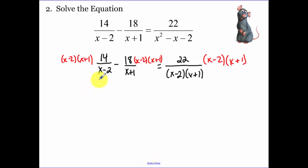x minus 2 times x plus 1 for each term. Now, x minus 2's cancel, so I'm left with 14x plus 14. x plus 1's cancel, so I need to distribute a negative 18: minus 18x plus 36. Make sure you're distributing the negative to each one of those terms. Equals, the whole denominator goes away. Multiplying by that least common denominator is going to make your life easy.